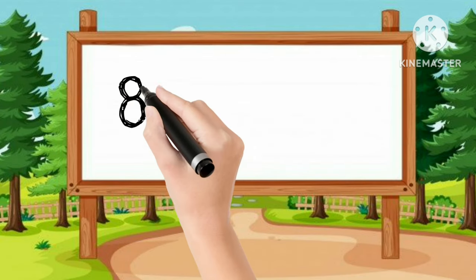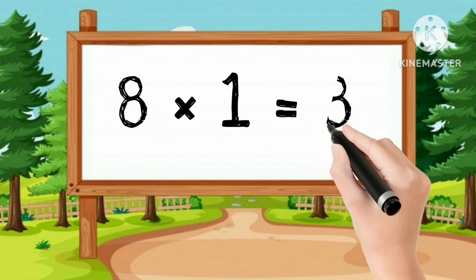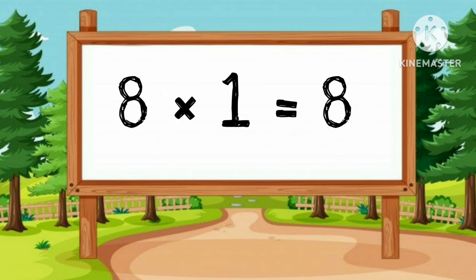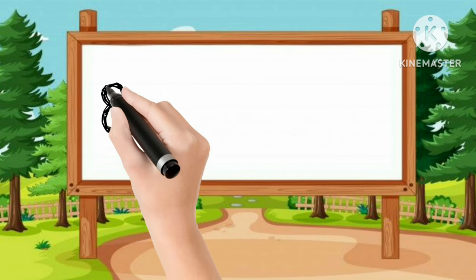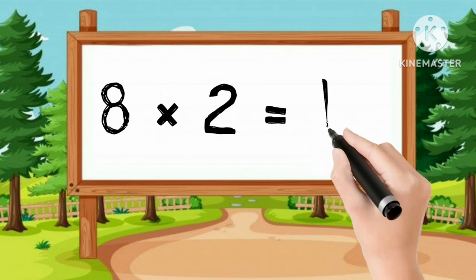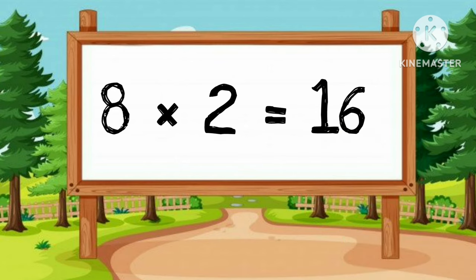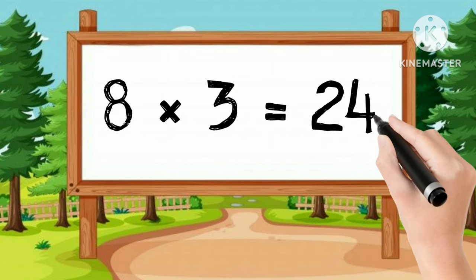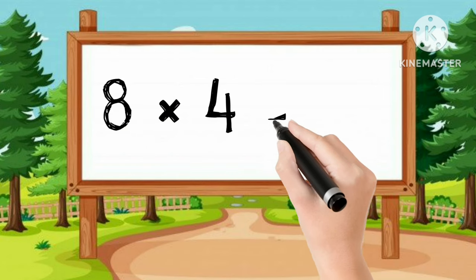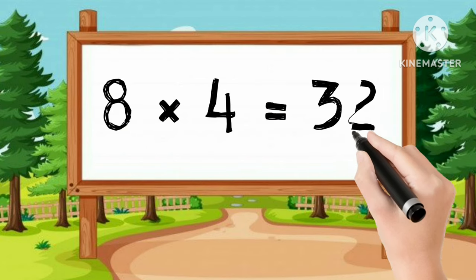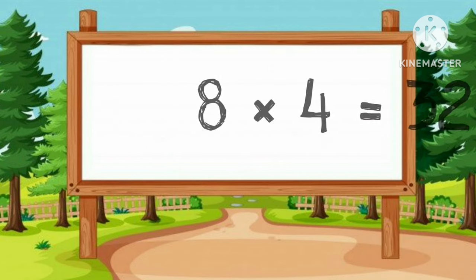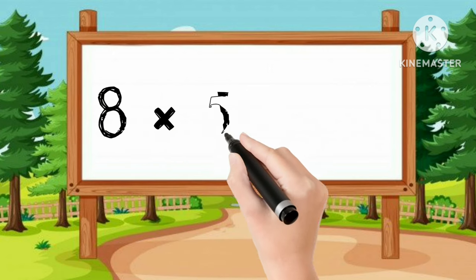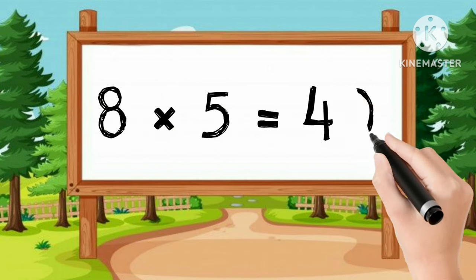Let's learn table of 8. 8-1s are 8. 8-2s are 16. 8-3s are 16. 8-4s are 32. 8-5s are 40.